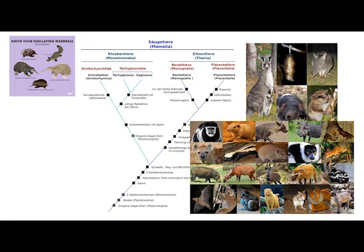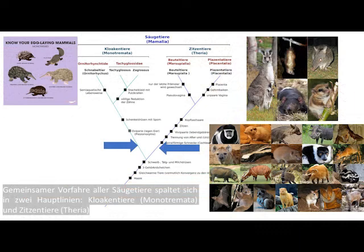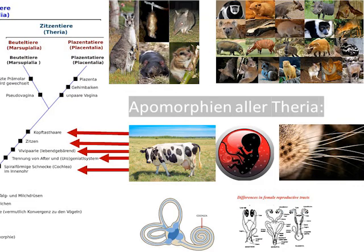Beginnen wir mit dem Stammbaum ganz unten, also an der Wurzel. Dort sind einige Merkmale aufgelistet, die der gemeinsame Vorfahre aller Säugetiere hatte — zum Beispiel Haare, drei Gehörknöchelchen sowie Schweiß- und Milchdrüsen. Danach spaltet sich das Kladogramm der Säugetiere in zwei Hauptäste. Der grüne Ast führt zu den Kloakentieren, die sich wiederum in zwei Äste aufspalten: Schnabeltiere und Schnabeligel. Die Schnabeligel teilen sich wieder in zwei Äste auf, und so weiter. Jede neue Abspaltung ist durch für diese zwei typische Apomorphien definiert.